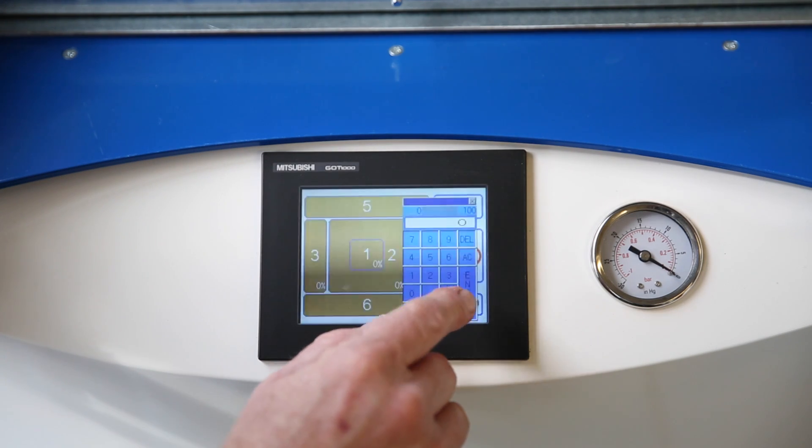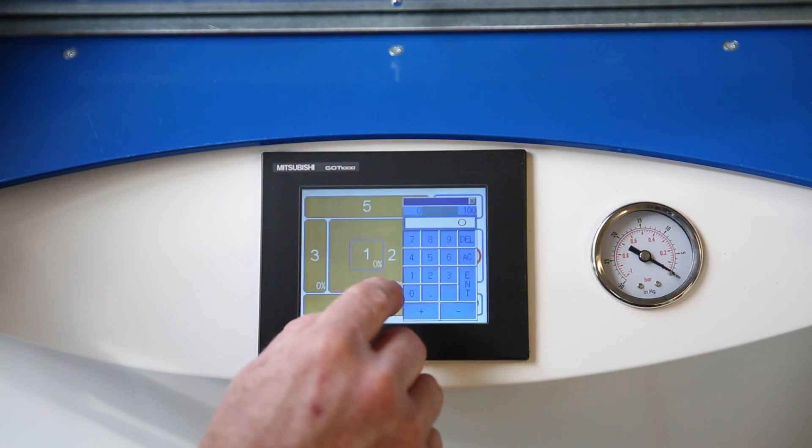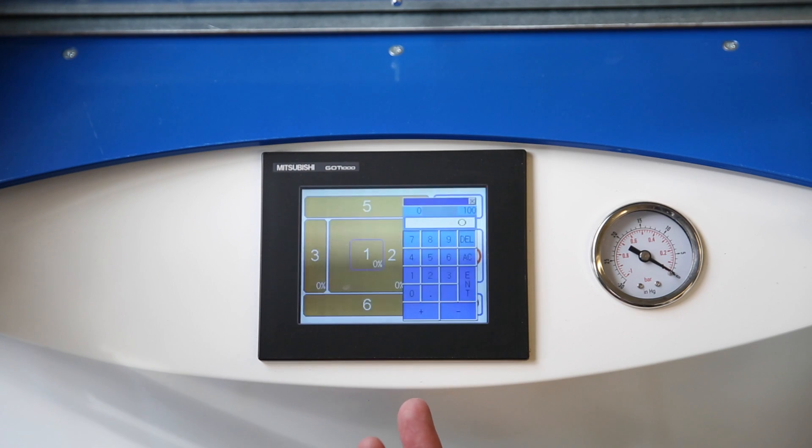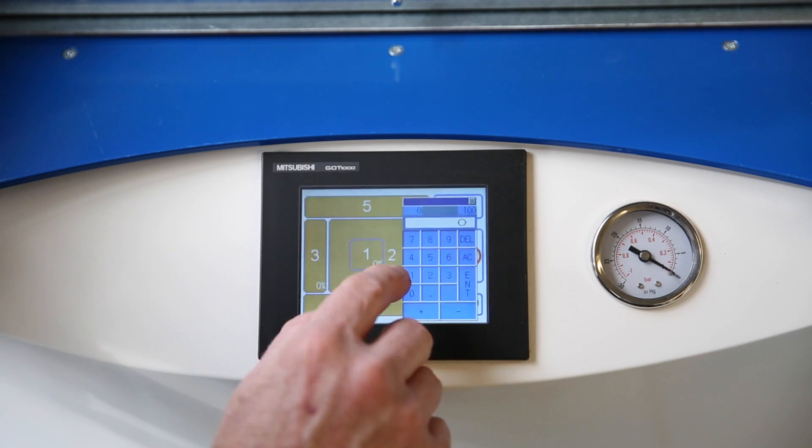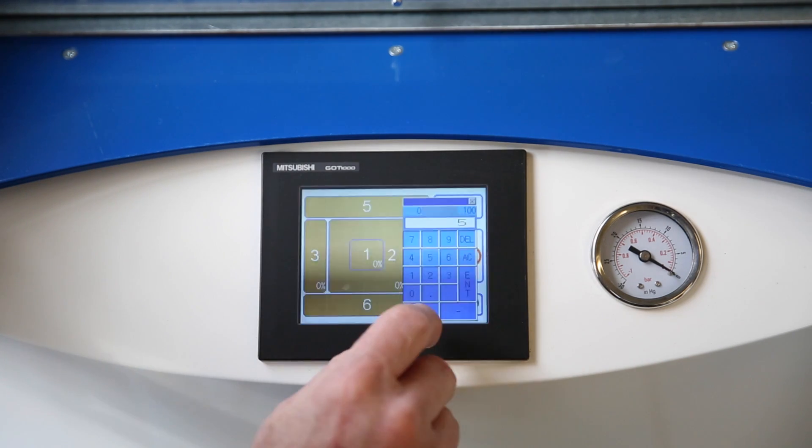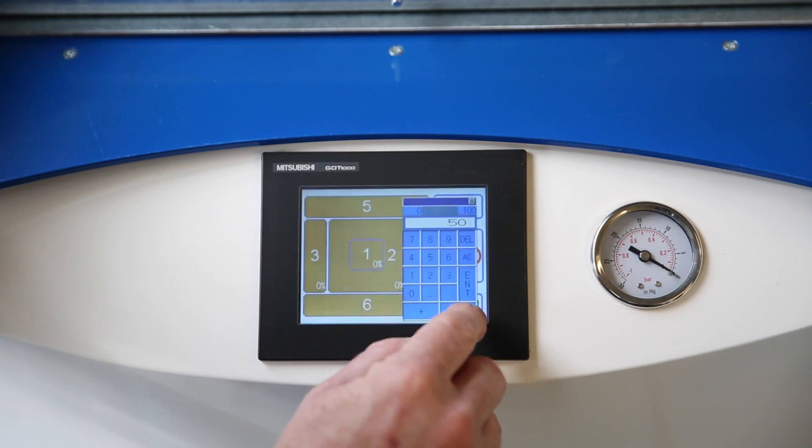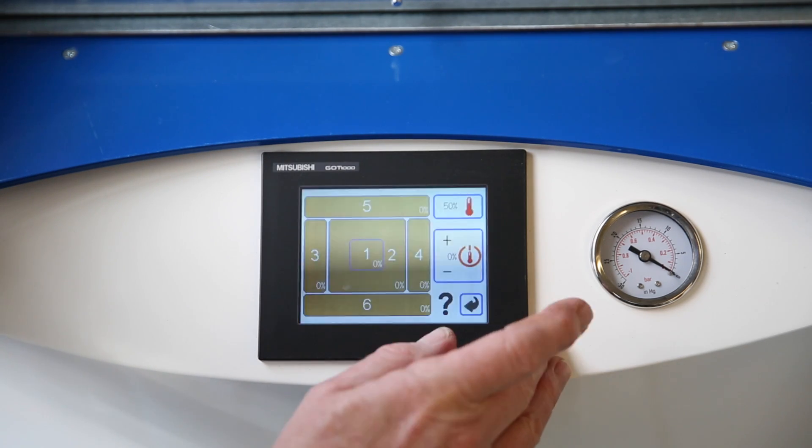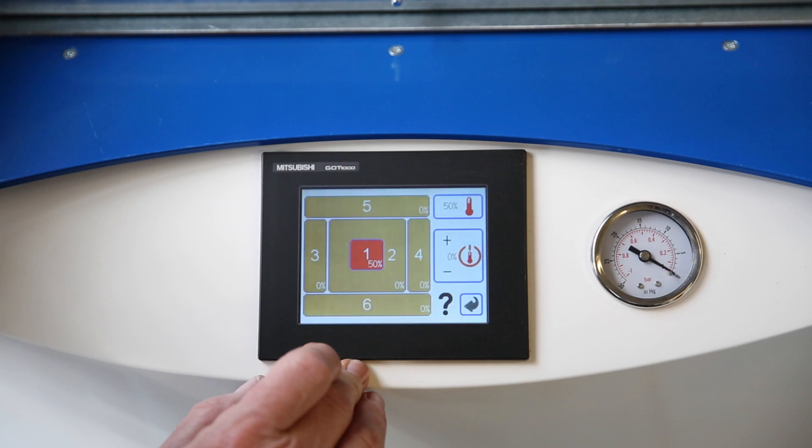For this particular film, we're going to use PETG. Fifty percent of maximum heat works well. Then enter, and then I'm going to put that value in zone one.